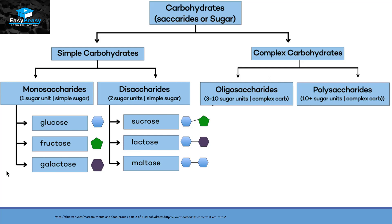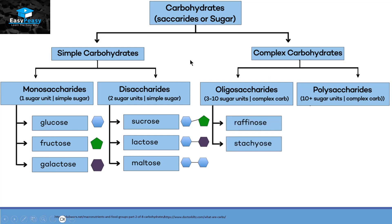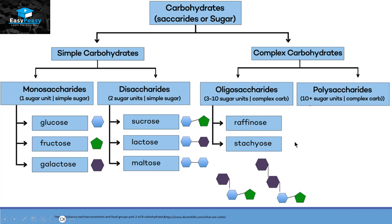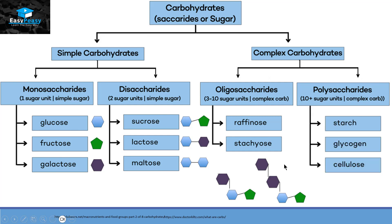Oligosaccharides have 3 to 10 sugar units in them. For example, raffinose is a trisaccharide unit and stachyose is a tetrasaccharide unit. Then we have polysaccharides, which include more than 10 sugar units in them. For example, starch, glycogen, and cellulose, etc.